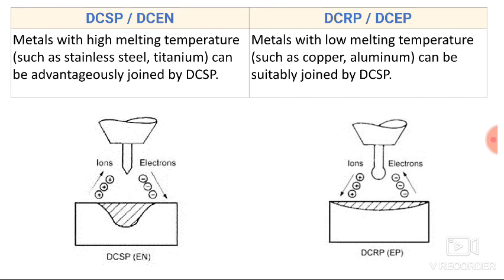Metals with high melting temperature such as stainless steel and titanium can be advantageously joined by direct current straight polarity, as maximum heat is generated over the surface of the base plate. Metals with low melting temperature such as copper and aluminium can be suitably joined with direct current reverse polarity. This summarizes the differences between direct current straight polarity and direct current reverse polarity.